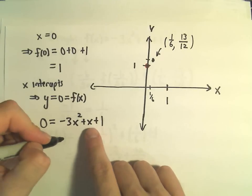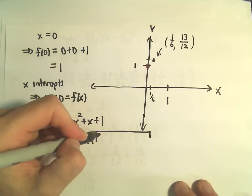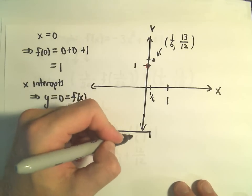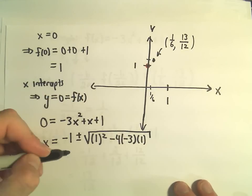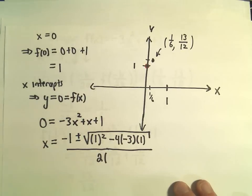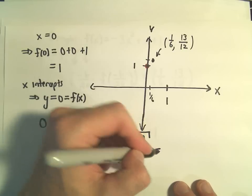x equals negative b, so that will give us negative 1, plus or minus the square root of b squared, minus 4 times a, which is negative 3, times c, which is positive 1. And then we take 2 times our a value, which is going to be negative 3.